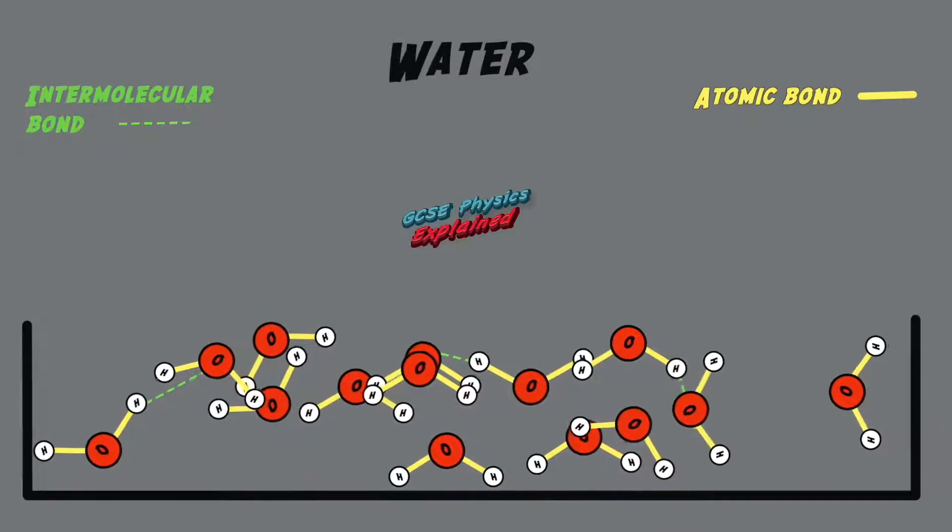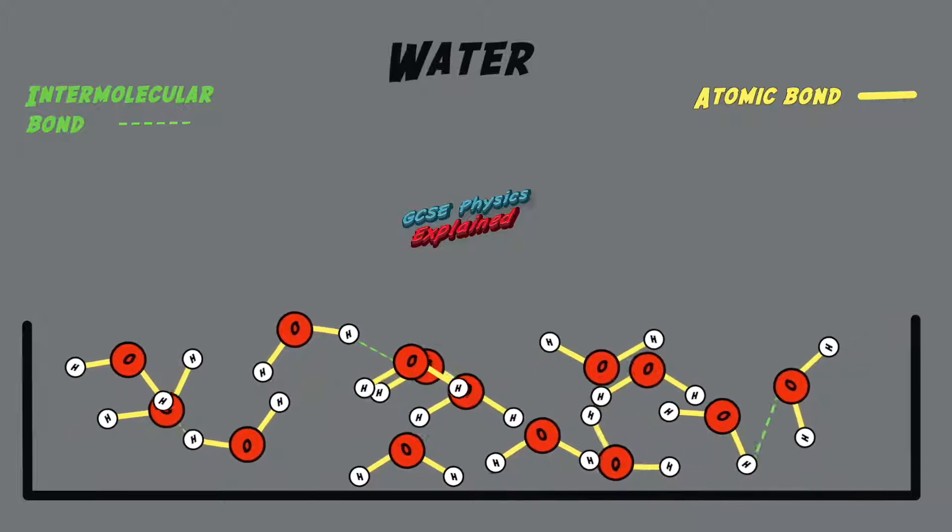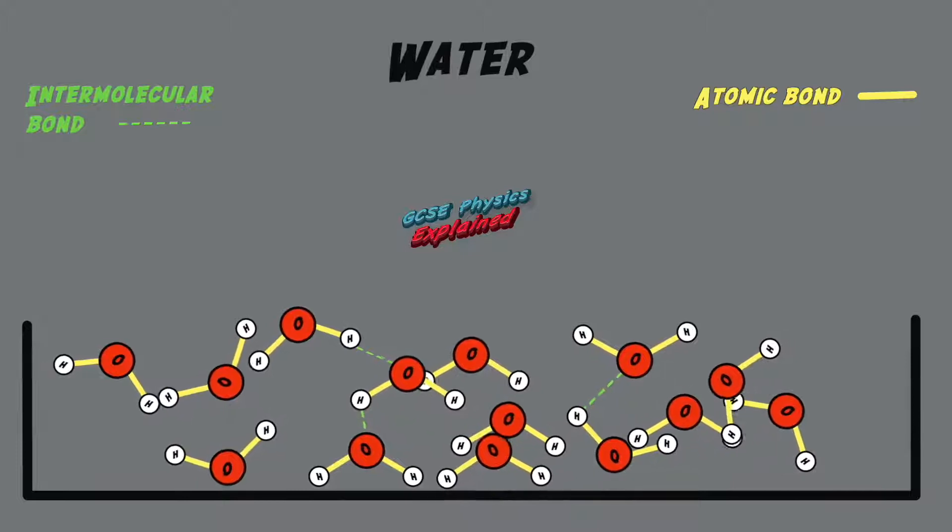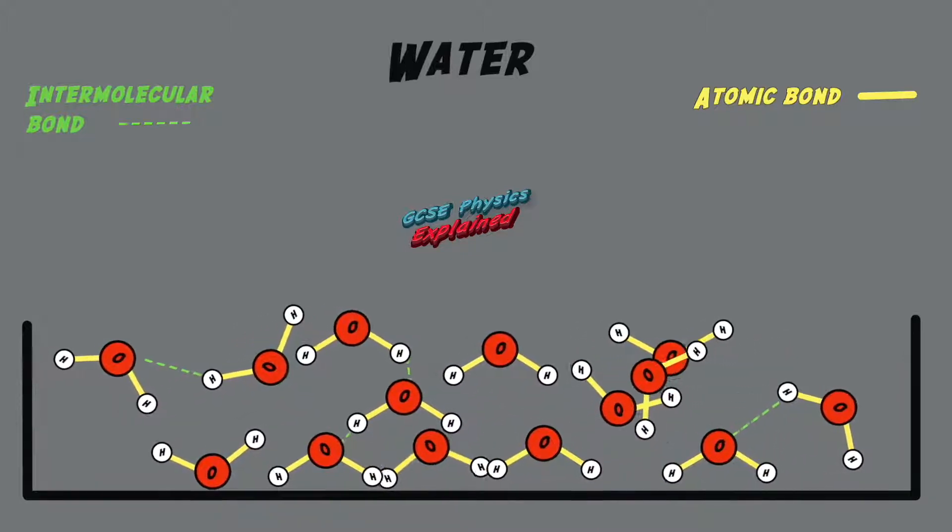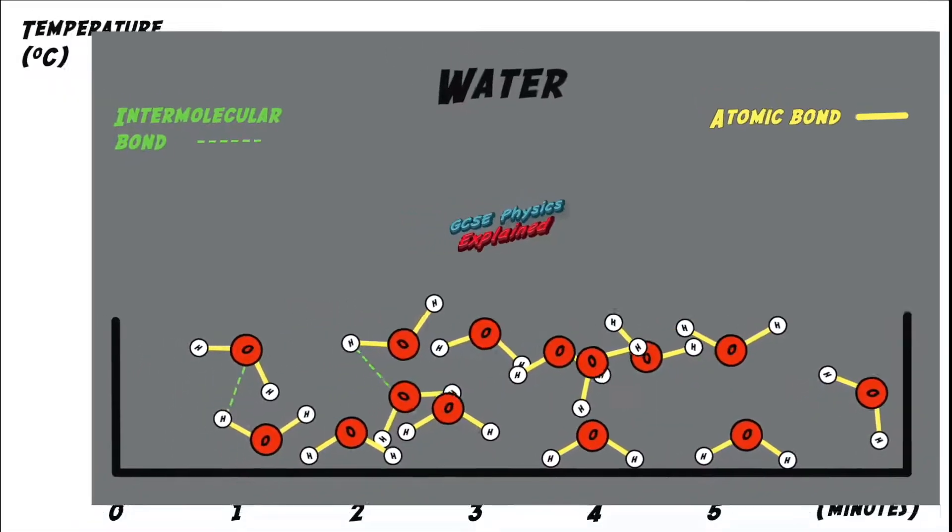However, these intermolecular bonds quickly break because the molecules have enough energy to overcome them. It's the constant reforming and breaking of intermolecular bonds in liquids that allow liquids to flow and change their shape, but not their volume.